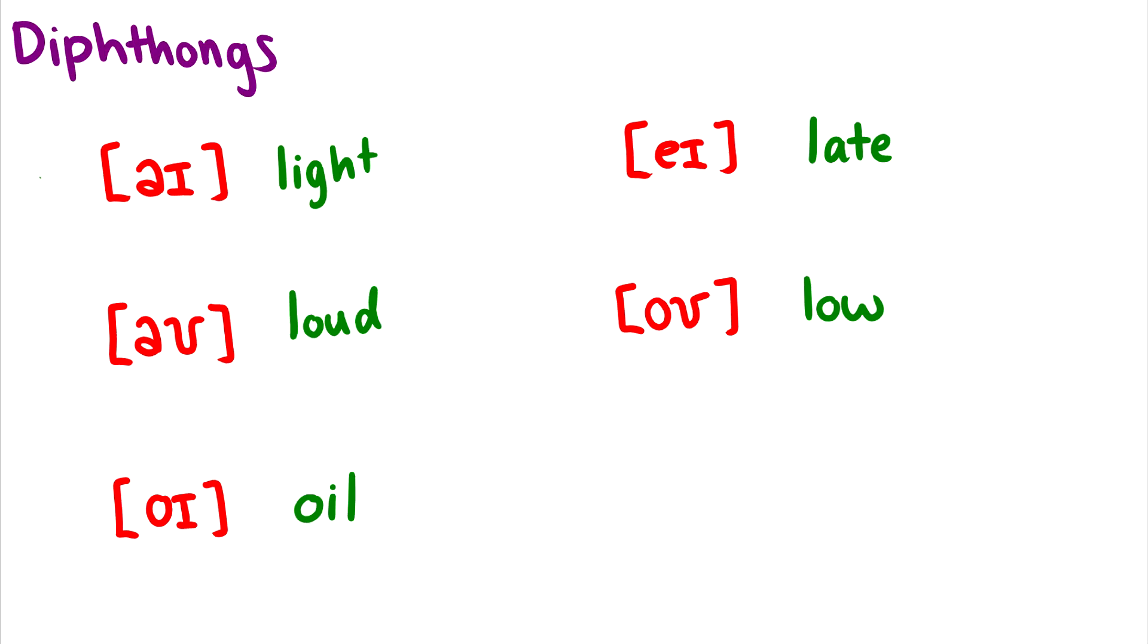The second type of sound we have are diphthongs. These require movement of your tongue. So eye, as in light. It starts down at the bottom where the ah is and it moves towards this ih.